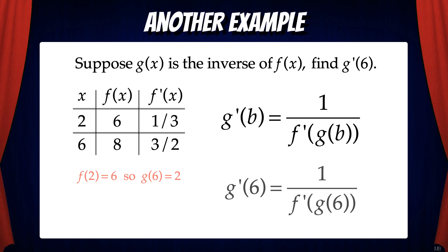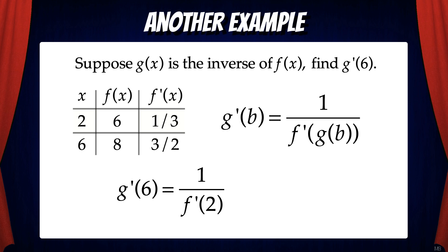Now we can swap that in. g prime of 6 is then 1 over f prime of 2. But f prime of 2 is 1 third from the table. That means g prime of 6 is 1 over 1 third, which equals 3. And we got it.